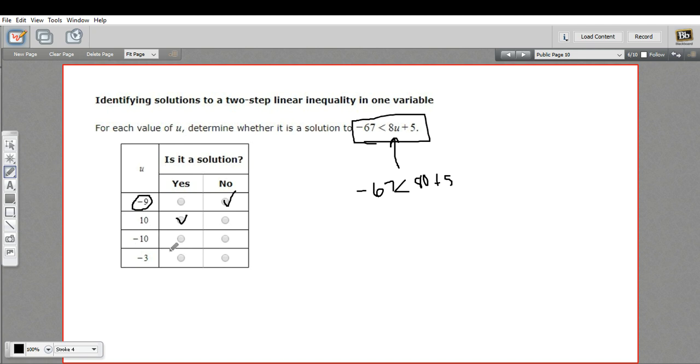My guess is negative 10 is not going to work. Let's try it. Negative 67 less than or equal to, well, 8 times negative 10 would be negative 80 plus 5. So negative 67 is less than negative 75.